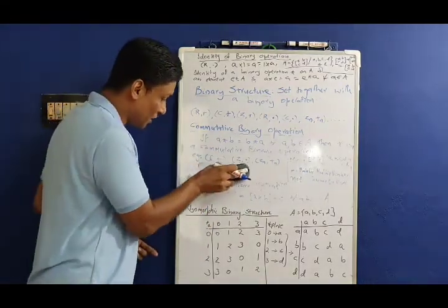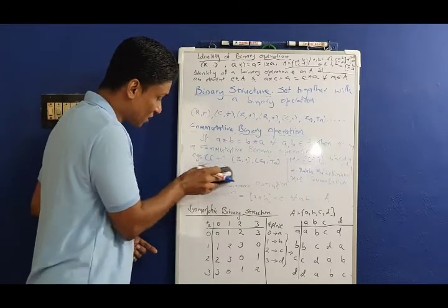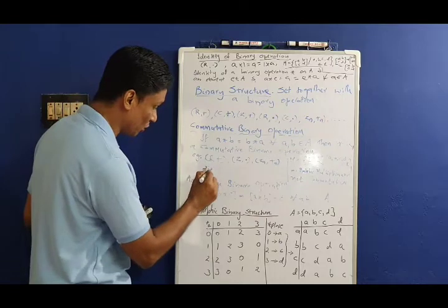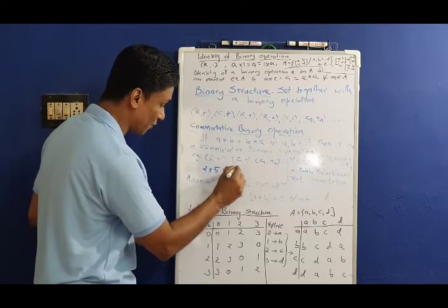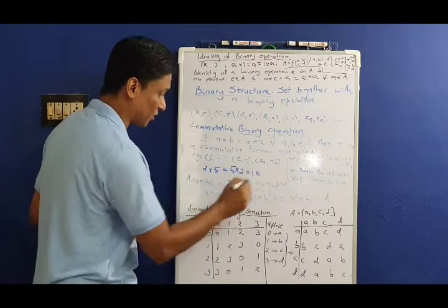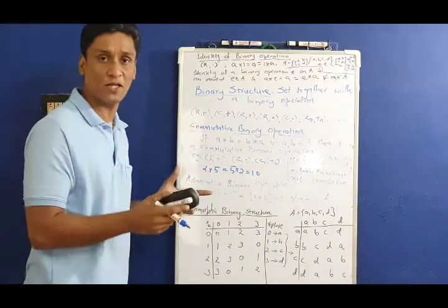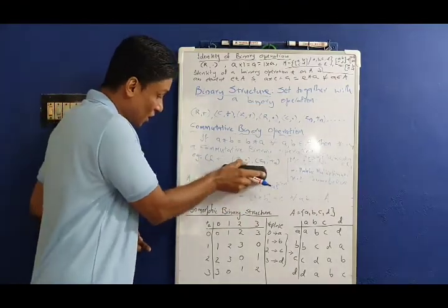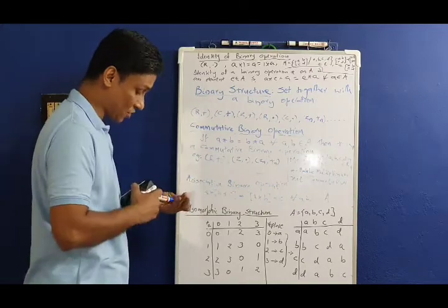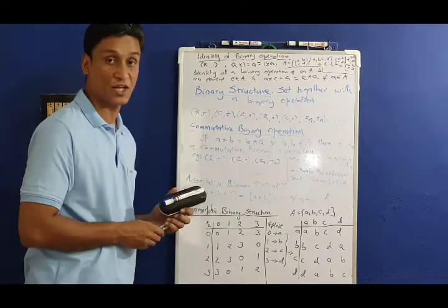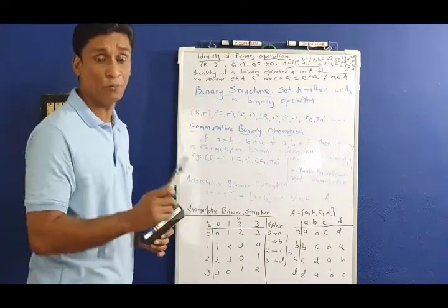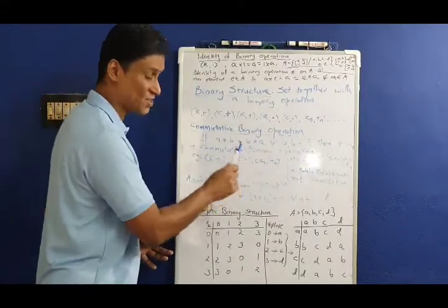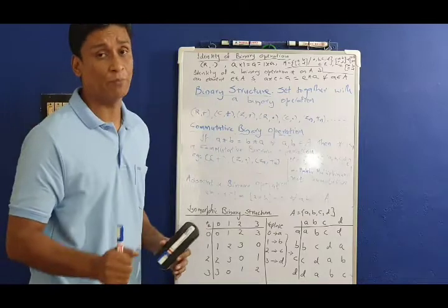Another example: the set of all integers under multiplication. We have 2 times 5 equals 5 times 2 equals 10. Therefore, multiplication on the set of all integers is a commutative binary operation.